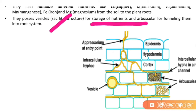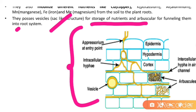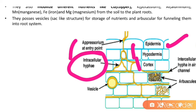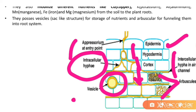Looking at the figure, we can observe how mycorrhiza enters the root system. The first layer is the epidermis, where they form a pressorium at the entry point. From the epidermis, they enter the hypodermis, then the cortex, where they form intracellular hyphae. Finally, they form arbuscules and vesicles inside the root system.